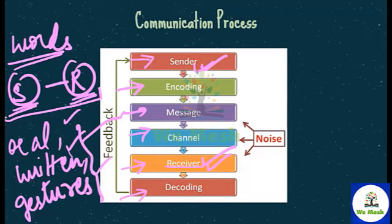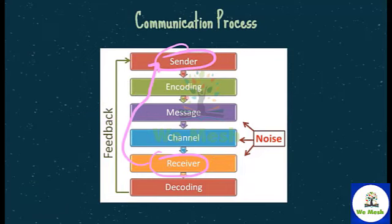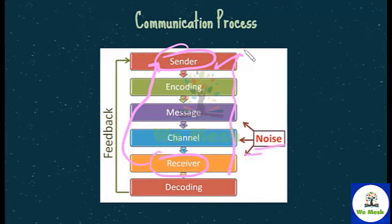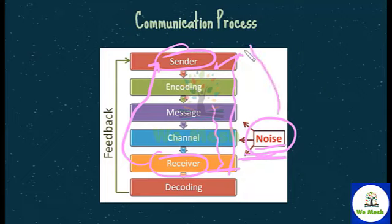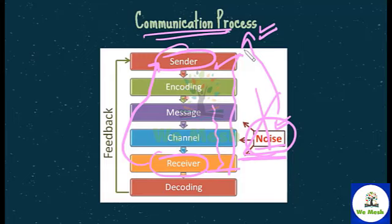Two more elements in the communication process are feedback and noise. After receiving the message, the receiver will take necessary action and send feedback information back to the sender. Noise refers to any kind of external disturbance that occurs when a message is being passed from sender to receiver. This disturbance does not allow the receiver to understand the information properly and distorts the communication process. If there is no noise, communication will take place smoothly; but if there is a lot of noise, communication will be distorted.